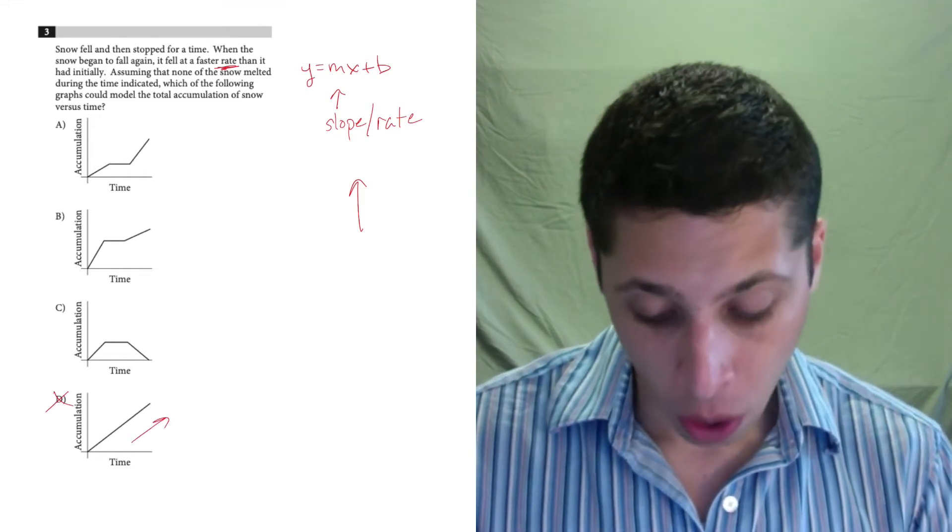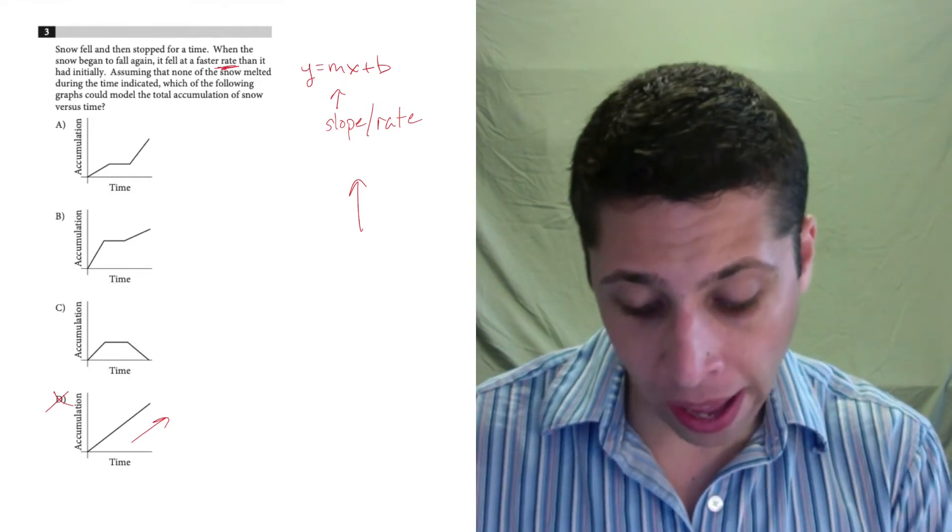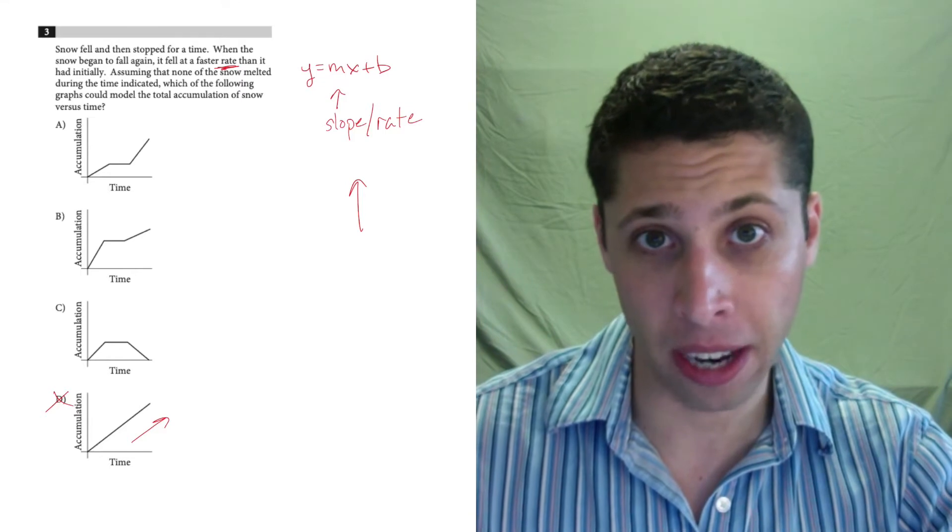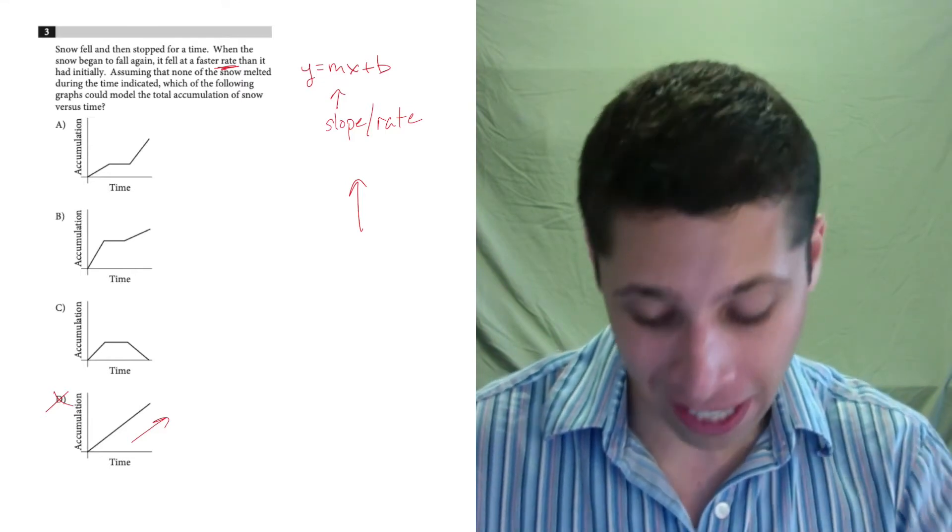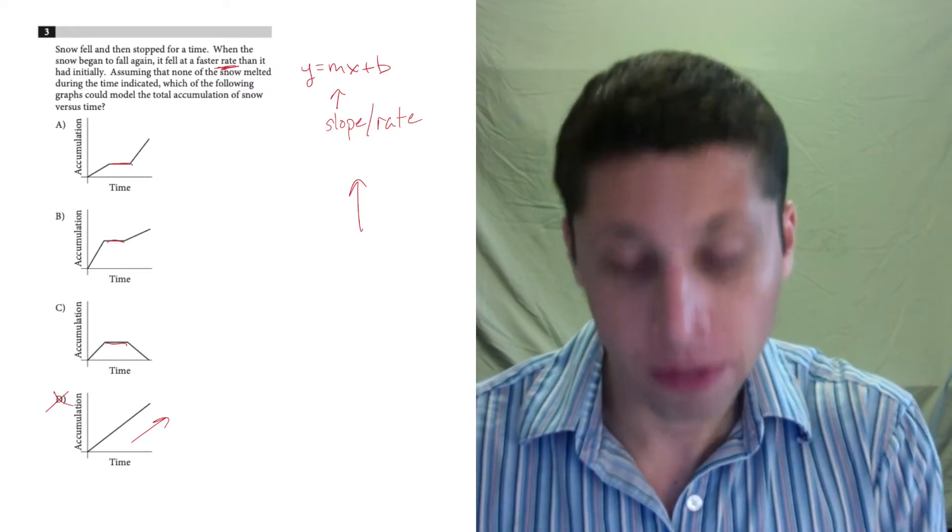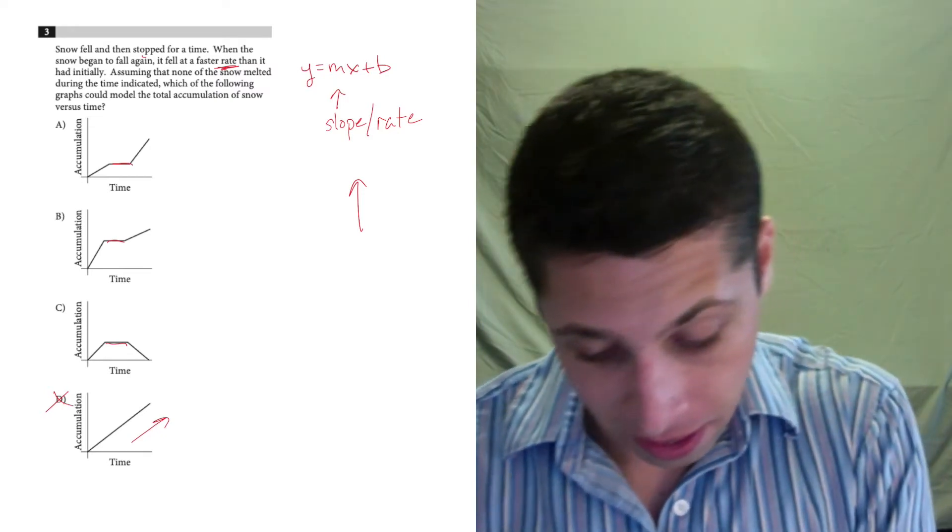That's not what we want. All A, B, and C have to show that the flat time that the snow stopped falling is these little bars in the middle where things are flat. That's this part.